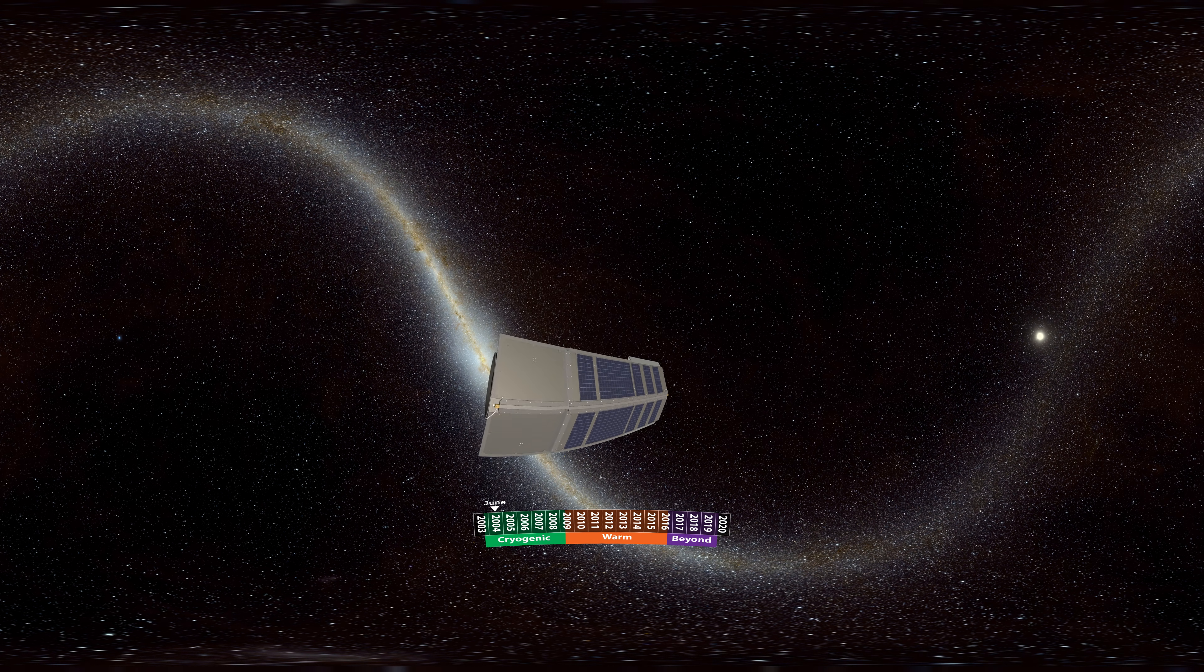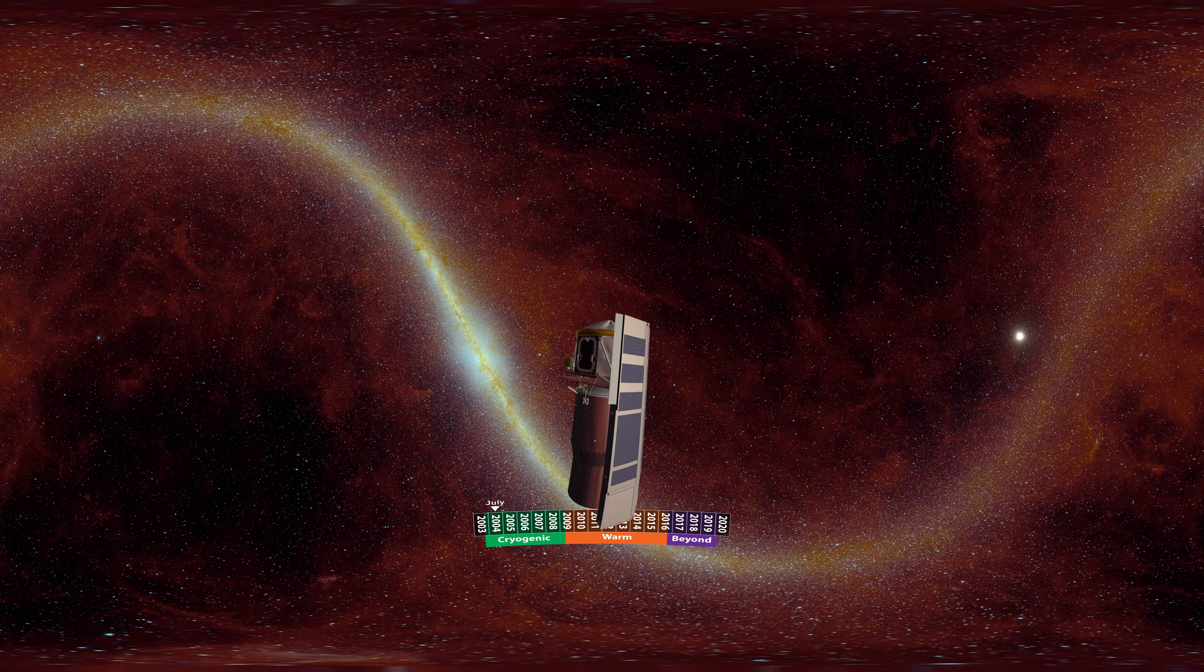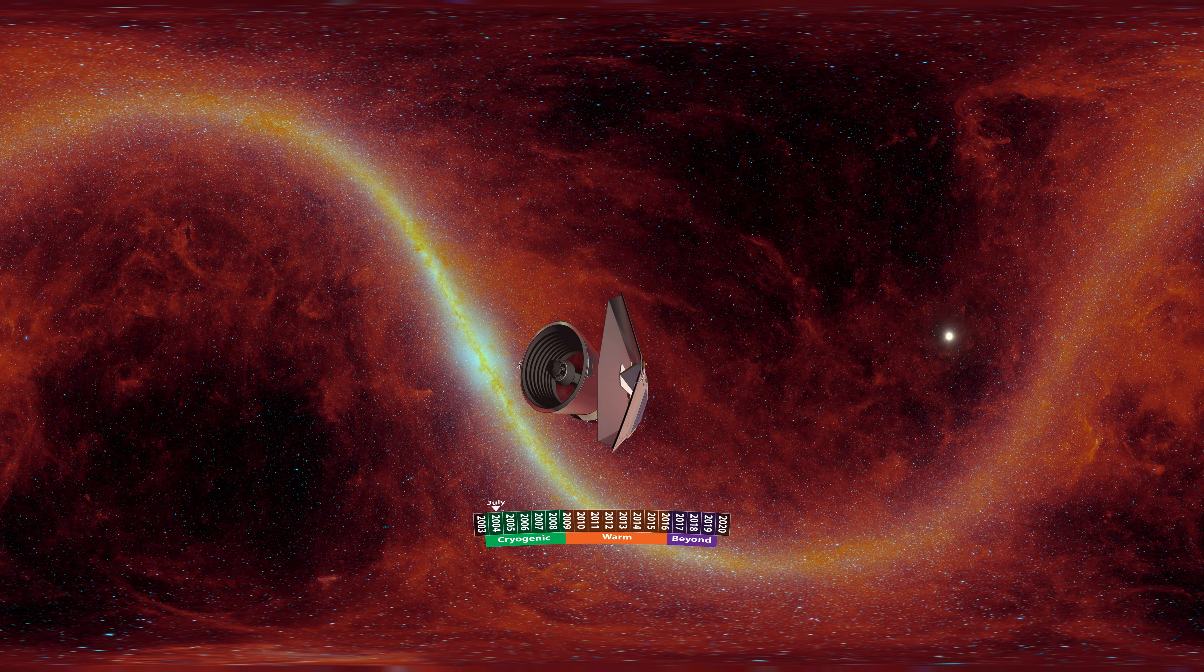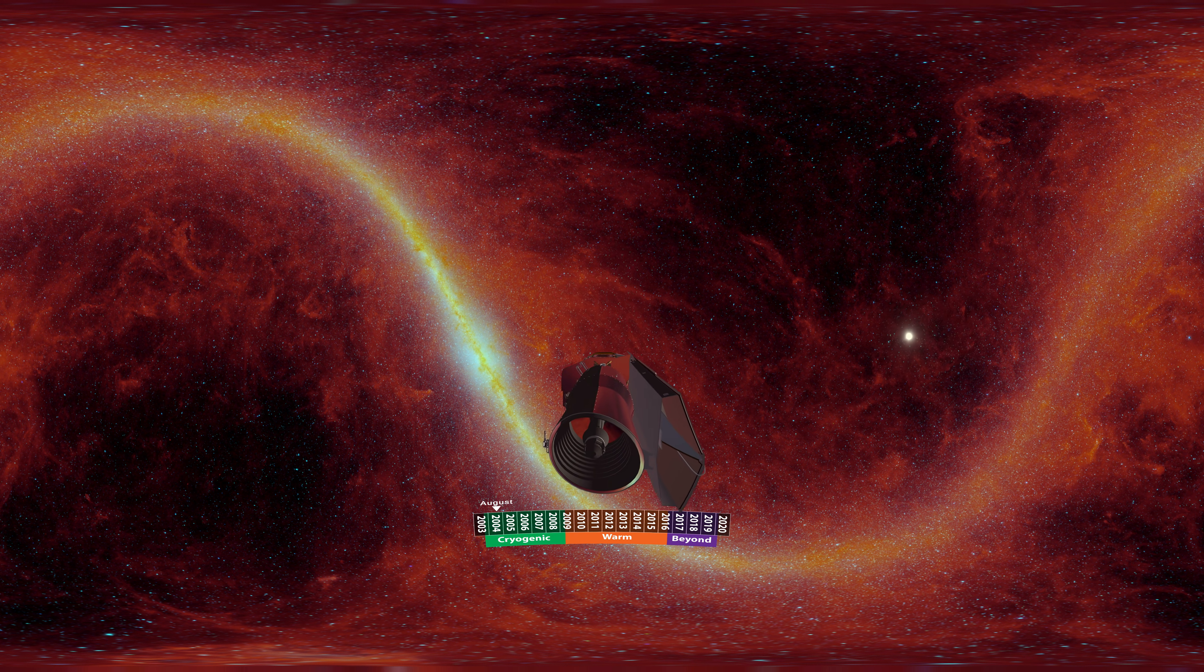As we push into even longer wavelengths of infrared light, the clouds of dust themselves begin to glow, revealing intricate structures filling space between the stars. Many of the brightest areas are heated by the warmth of newly forming stars.